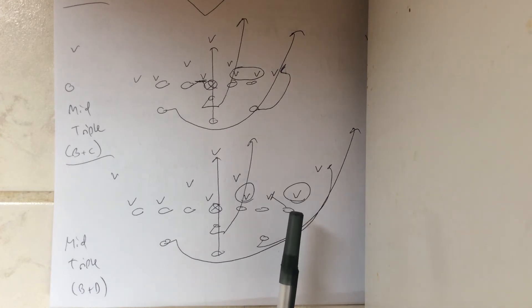But if the D-gap defender can take the quarterback, which is kind of tougher to do, the quarterback stops his feet and flicks the ball. So the receiver crushes the C-gap defender, and the quarterback has the B and D-gap defender.